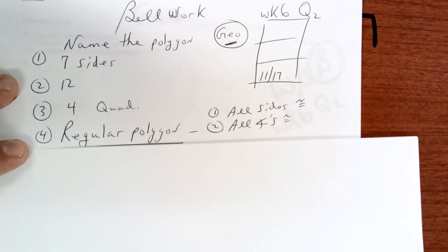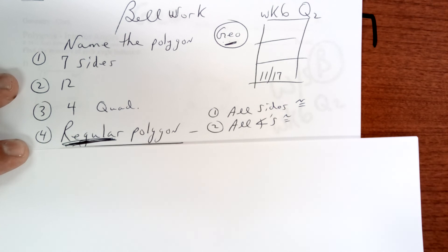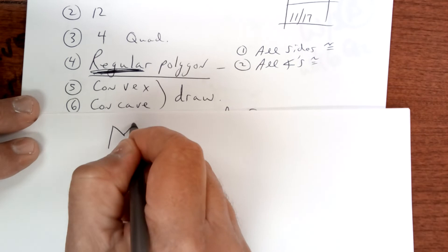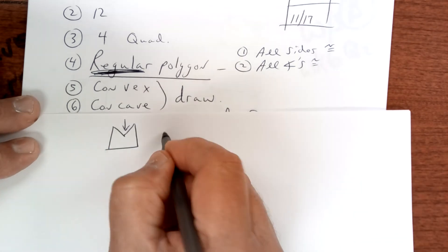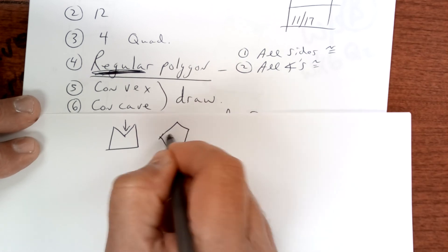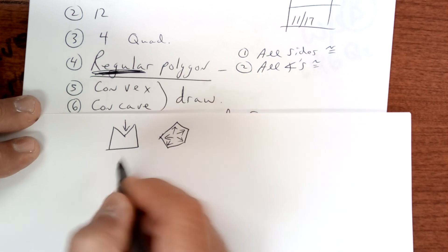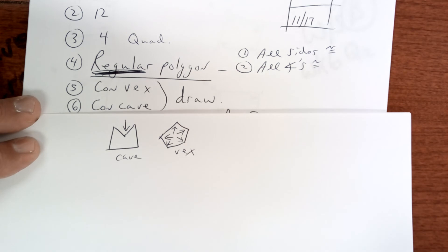What is convex and concave? Well, concave is where the vertex pushes in, and convex would be where the vertices all push out. So cave and vex, fun cave.